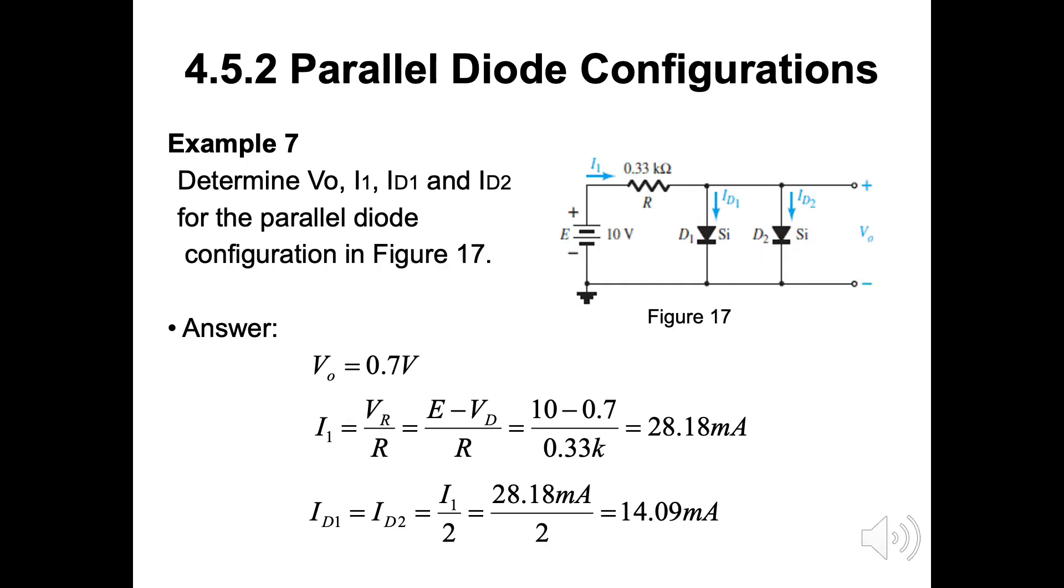For example 7, we need to determine VO, I1, ID1 and ID2 for the parallel diode configuration in figure 17. As the VO is parallel with the D2, VO is similar to knee voltage of D2 which is 0.7V. Since D1's voltage is same with D2, I here can be solved. I1 is equal to 28.18mA. Example 7 shows the parallel behavior in ID1 and ID2 which gained current from I1 equally divided into 2 as 14.09mA.